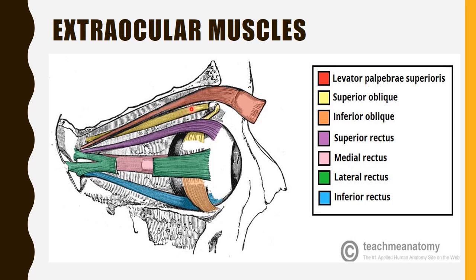This section shows the arrangement of the extraocular muscles in the orbit. The levator palpebrae superioris is visible at the top, the superior oblique passes through the trochlea or pulley, the superior rectus is shown in purple, the lateral rectus in green (cut to reveal the medial rectus behind it), and the inferior rectus in blue — all contributing to movement of the eyeball.